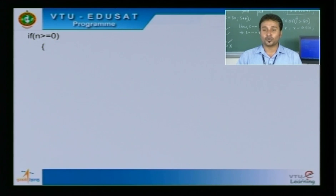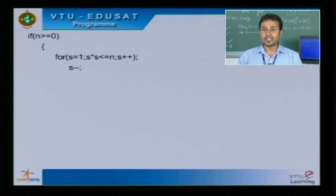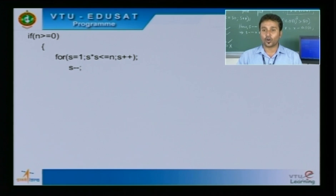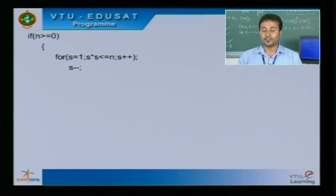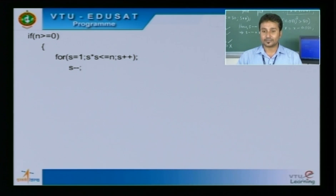The square root of a negative number cannot be computed. The very first for loop inside the if statement is: for s equals 1, s*s less than or equal to n, s++. This for loop has been terminated with a semicolon, and the very next line after the for loop is s--. This complete for loop is used to calculate the decimal part of the root, which will be clearly explained during tracing.